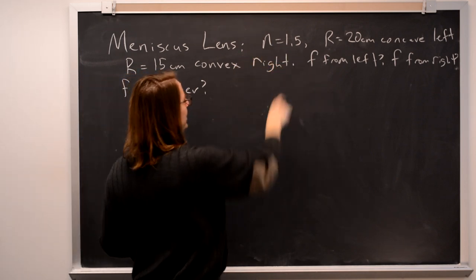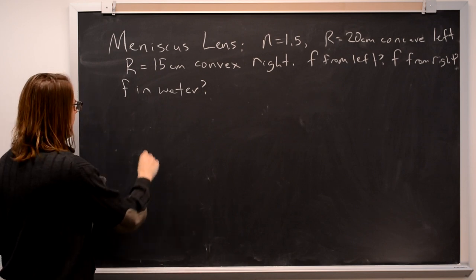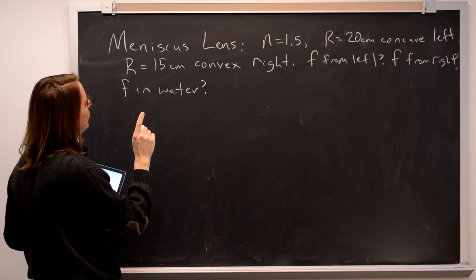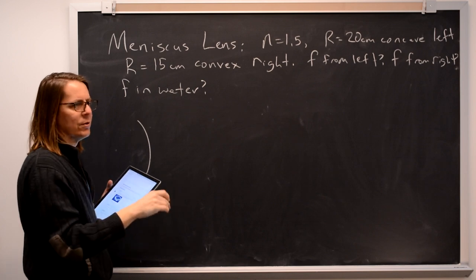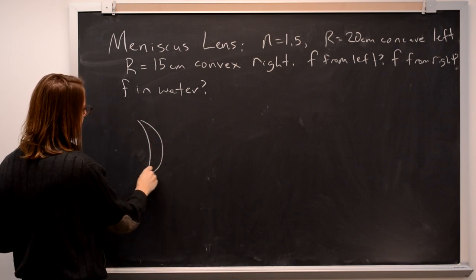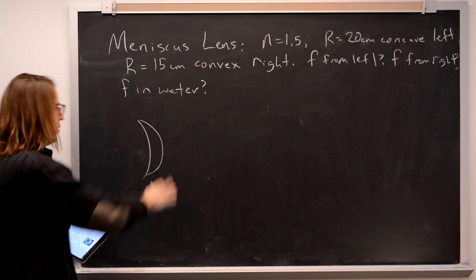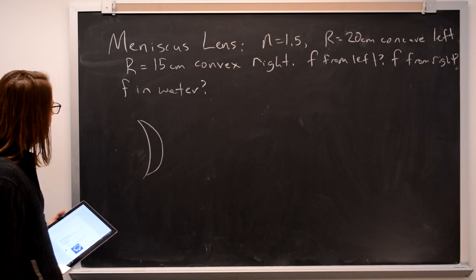It's glass, so it has an index of 1.5. The radius of the left side is concave, so we'll draw something like that. But then the radius of the right side is convex, and it's actually a smaller radius of curvature, which means a smaller circle. This is why this is called a meniscus lens—it looks like the meniscus on water.